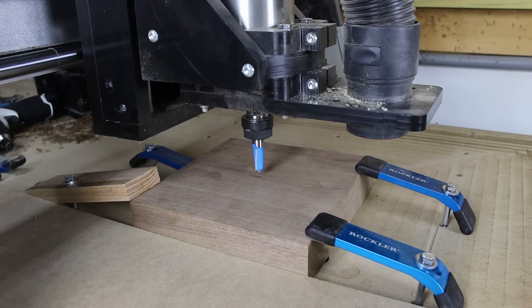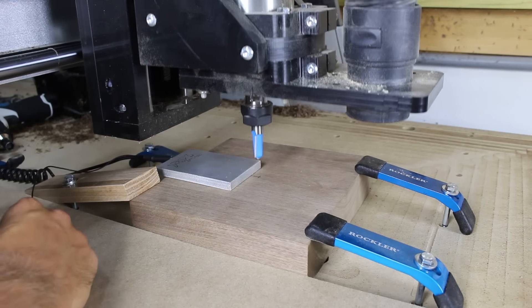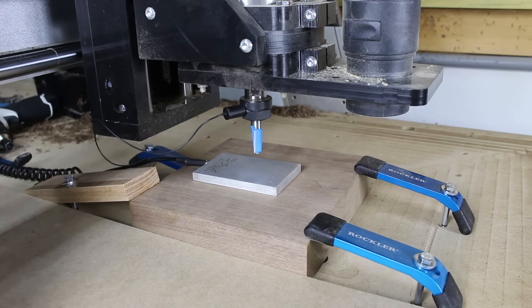I moved the spindle to the center of my workpiece, zeroed out the x and y-axis, and then used the touch plate to zero out the z-axis.